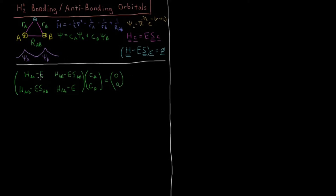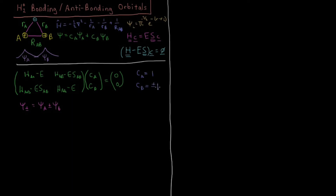This gives us two equations and two unknowns, which we solve for CA and CB. Working through the math, the solution is CA = 1, CB = ±1. This gives us ψ+ and ψ−, our two states, equal to ψA ± ψB according to coefficients 1 and ±1.